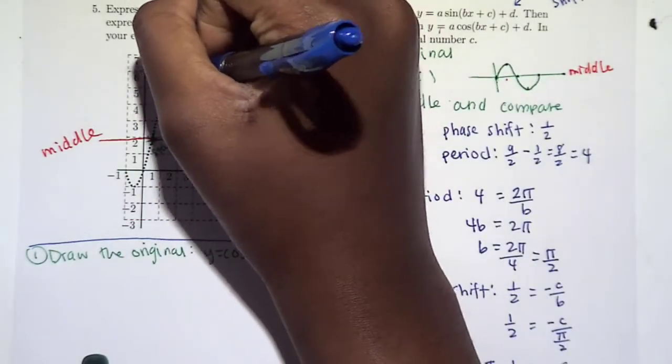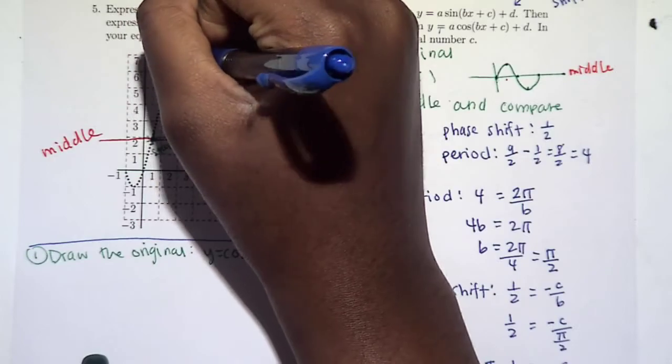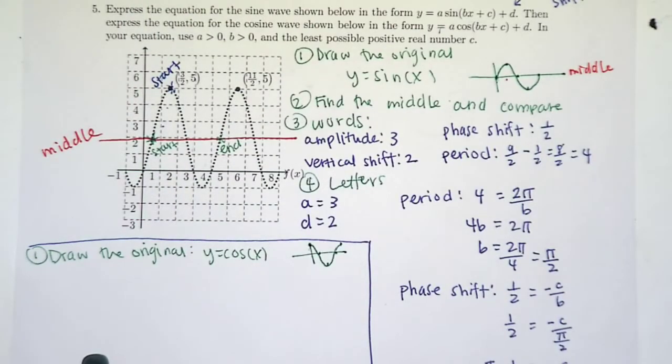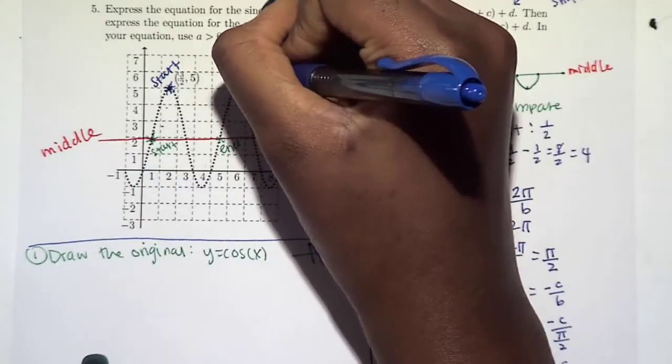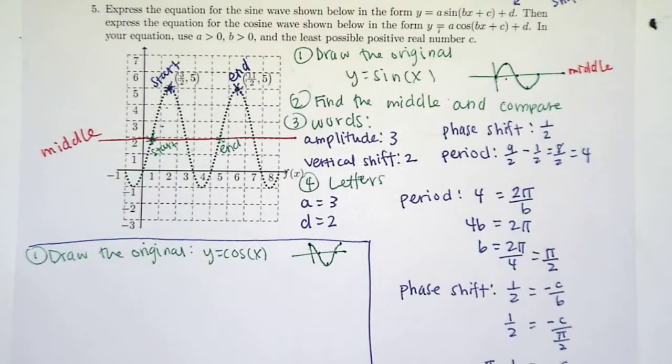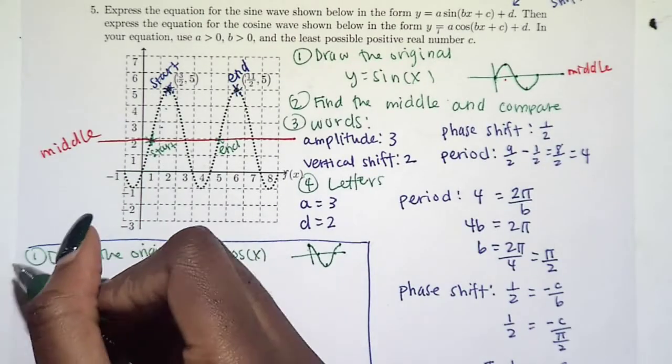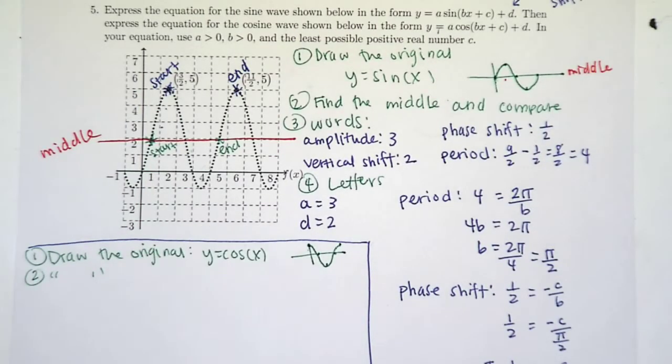So I think here is a good place to start our cosine graph, right? Because it matches up with what happens here. And so that means it's going to end here. All right, so we've already done step two by doing step one.